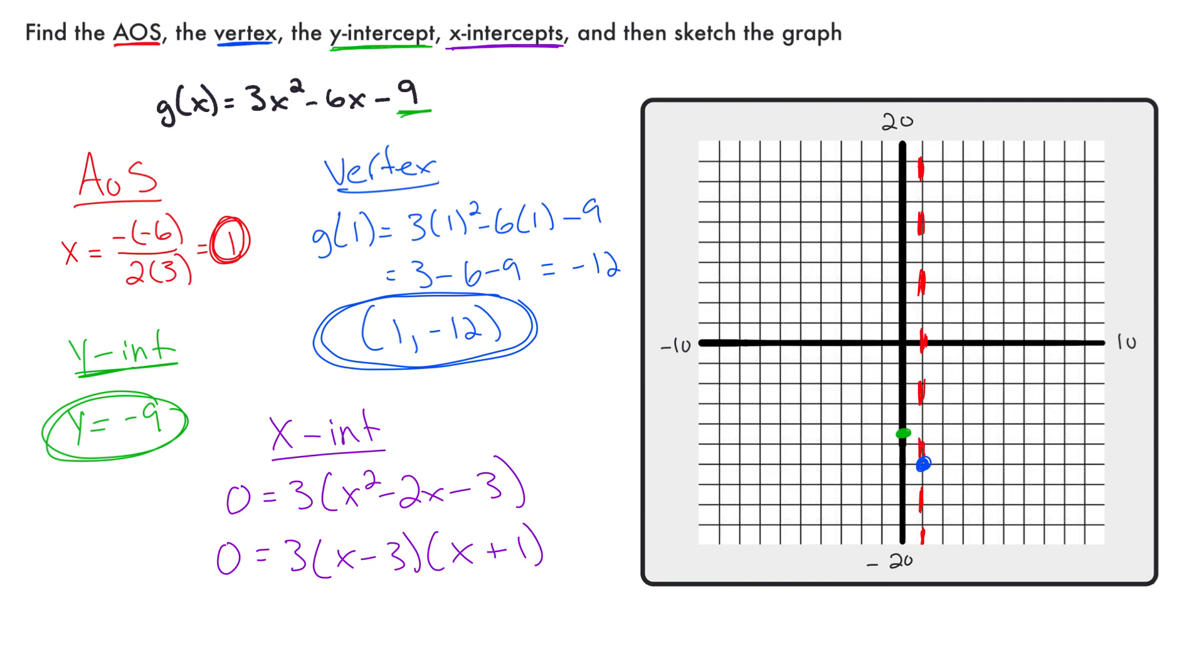That'll give me x-intercepts when x minus 3 equals 0 or when x plus 1 is equal to 0, which means x-intercepts are going to be at 3 and negative 1.